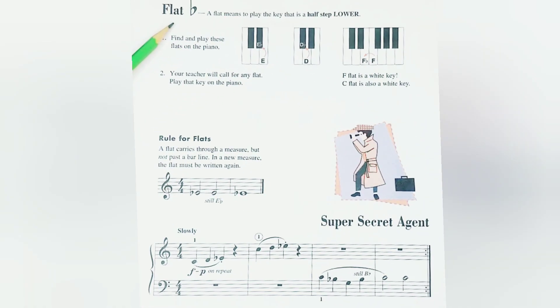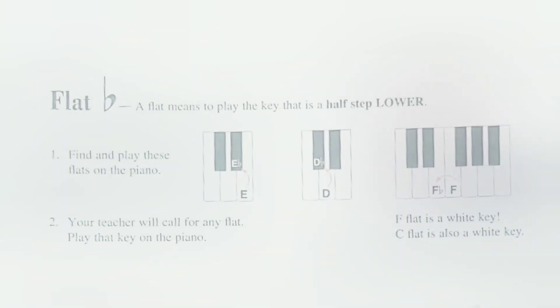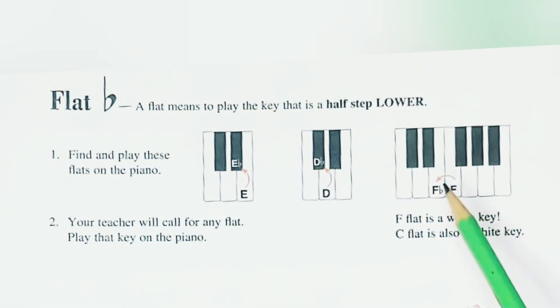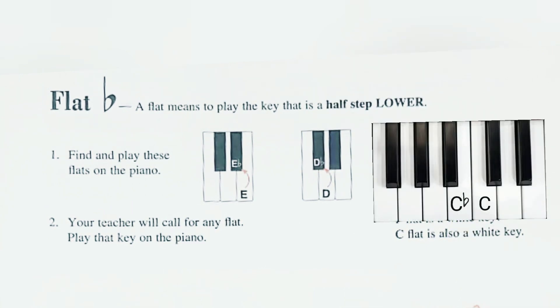A flat means to play the key that is half step lower, which means we are going to play the very next key to the left. F flat is a white key, so it's E. Also, C flat is going to be a white key.